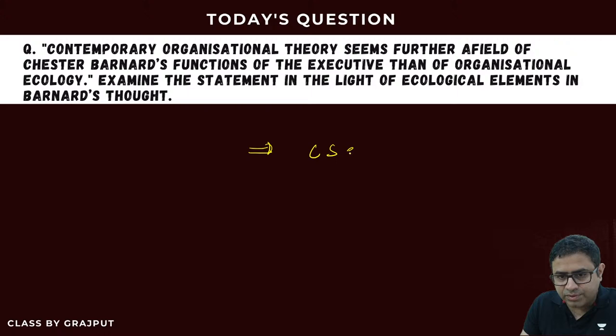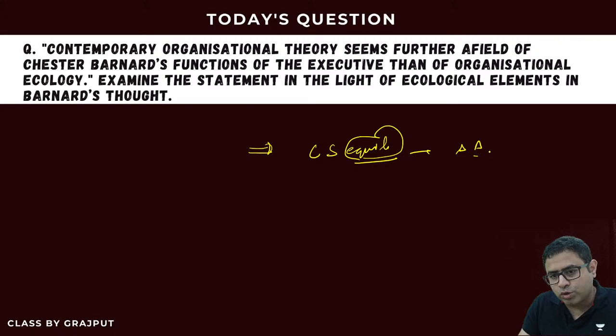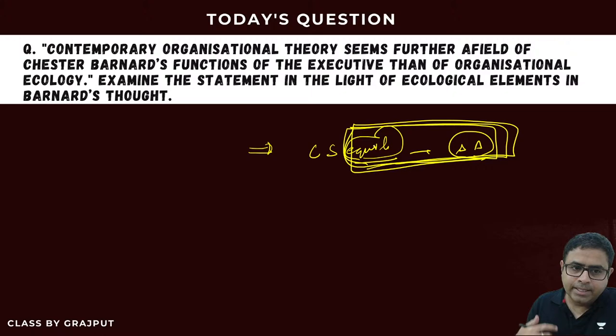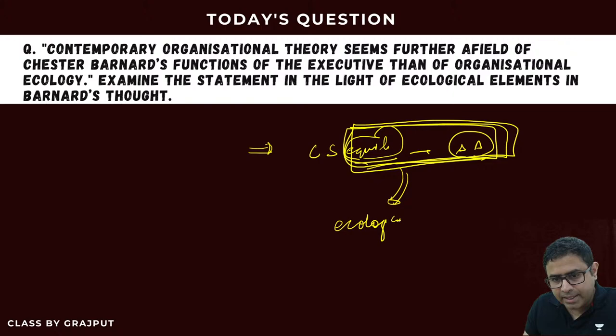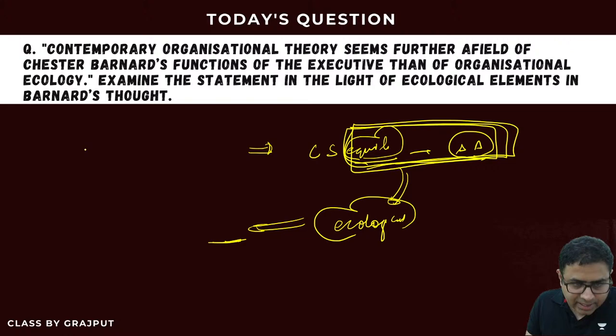Now the most important thing in Chester Bernard's theory is contribution-satisfaction equilibrium. The word 'equilibrium' is used extensively in the systems approach. So you can say that Chester Bernard's theory contains an ecological element, and it is this ecological element that is used in contemporary organization theory today.